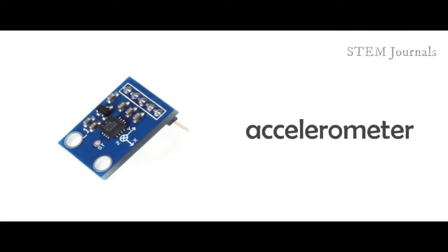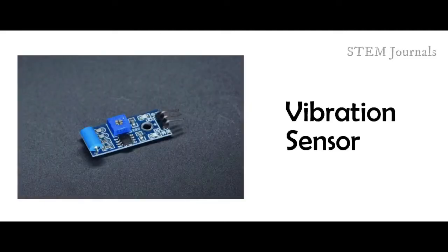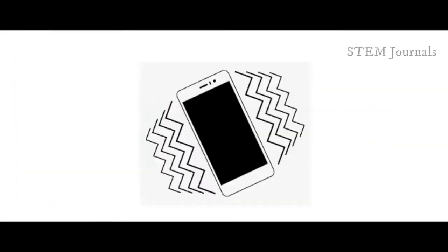As for the accelerometer, it measures every motion that creates acceleration to the device in every motion, and a vibrator which simply detects ground vibrations.